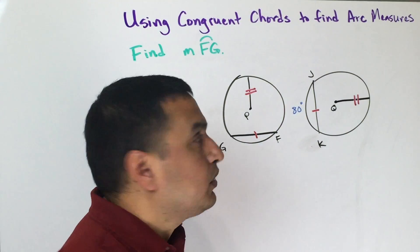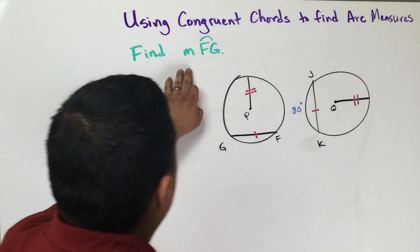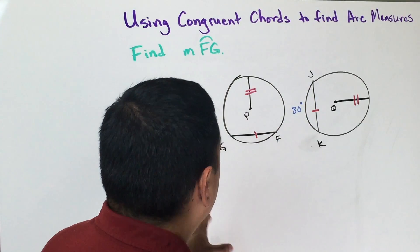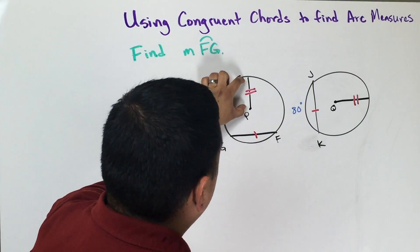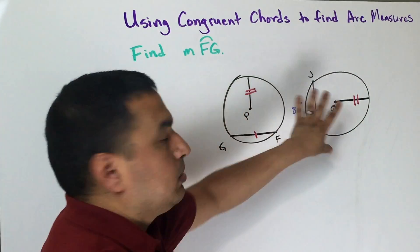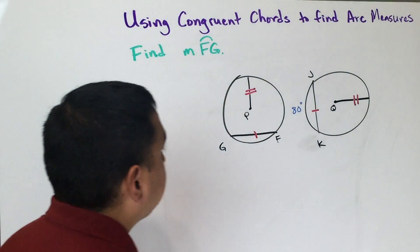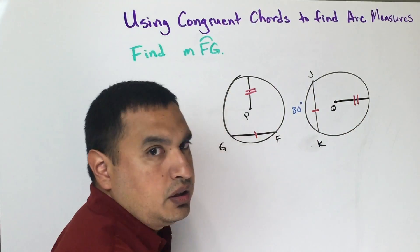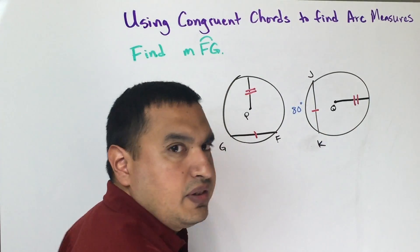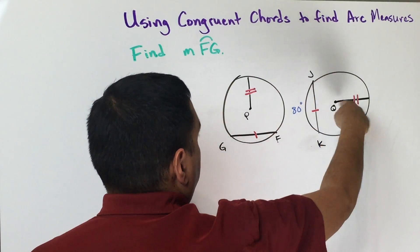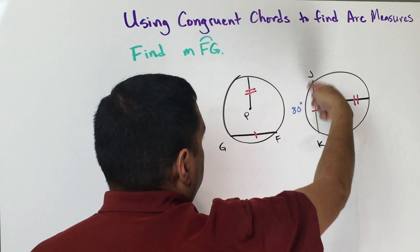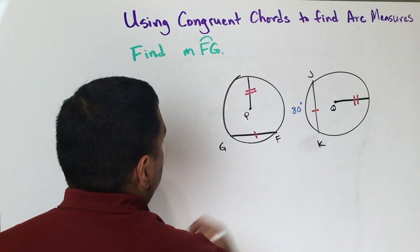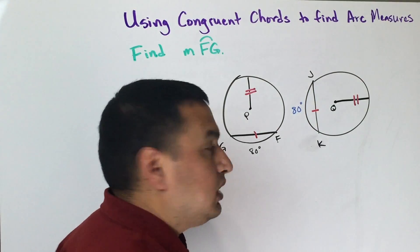Looking at the first example, we need to find the measure of arc FG. The radii of the two circles are congruent, so these are congruent circles. Chord FG and chord JK are the same length. Since arc JK on circle Q is 80 degrees, arc FG must also be 80 degrees.